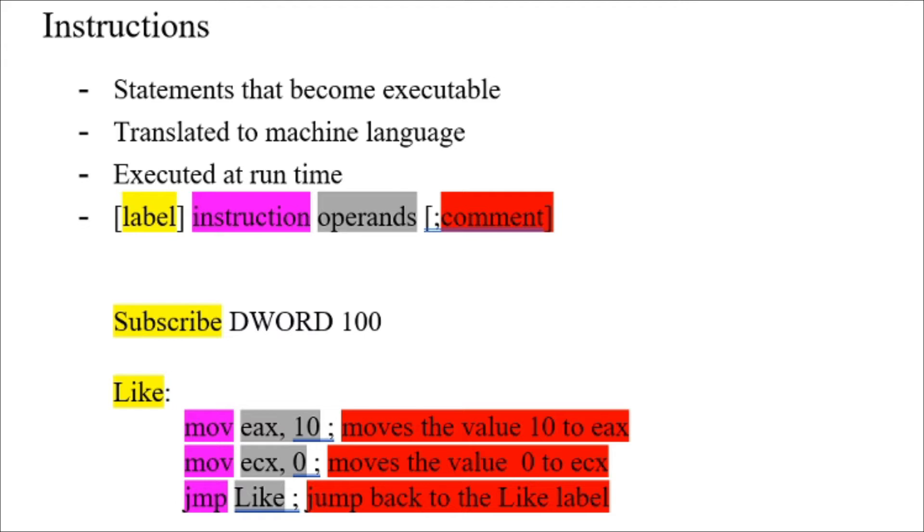Instructions have this syntax: you have the label, instruction, operands, and comments. The labels are usually optional and act as place markers. They mark the address of the code or data that you want. There are two kinds of labels.